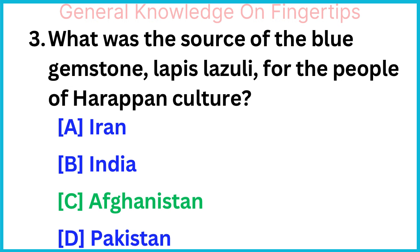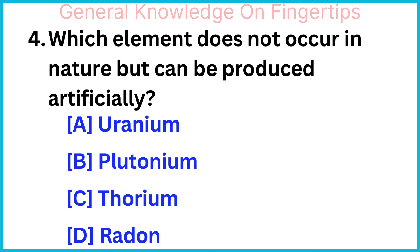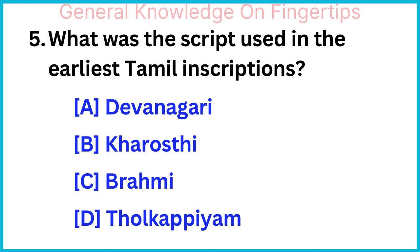Which element does not occur in nature but can be produced artificially? Plutonium. What was the script used in the earliest Tamil inscriptions? Brahmi.